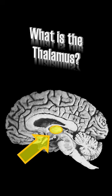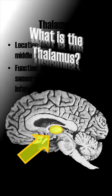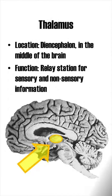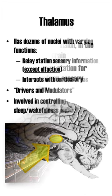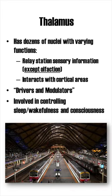What is the thalamus? The thalamus is a subcortical structure of the diencephalon in the middle of the brain. Its main function is to relay sensory and non-sensory signals. The thalamus contains dozens of nuclei with different inputs, outputs and functions.